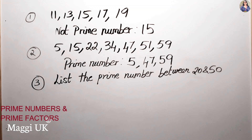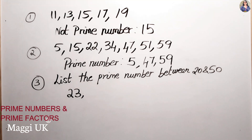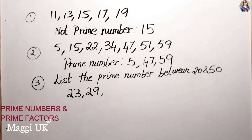22 is an even number, divisible by 2 and 11 — not prime. 23 is a prime number because it's only divisible by 1 and itself. 24 is an even number — not prime. 25 is divisible by 5 — not prime. 26 is an even number. 27 is divisible by 9 and 3. 28 is an even number. 29 is a prime number because we don't have any other factors for 29.